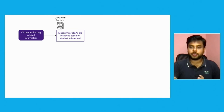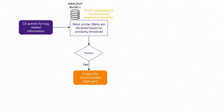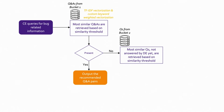The consulting engineer enters a query for bug-related information. The system searches Bucket 1 — answered questions — using TF-IDF vectorization and custom keyword-weighted vectorization as the backend logic. If found, it outputs the recommended question-and-answer pair. If not found in Bucket 1, it searches Bucket 2 — unanswered questions. If a similar unanswered question is found, it increments a counter for analytics — understanding that this is a critical question needing a response.